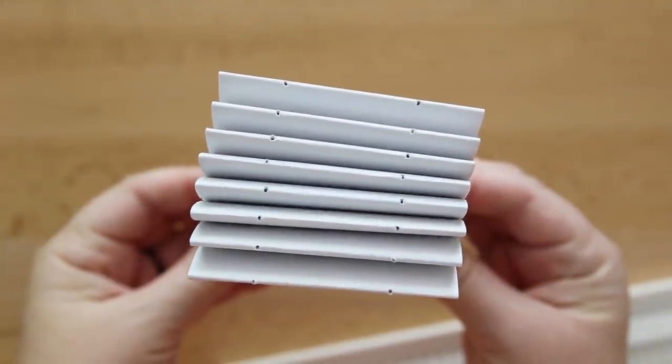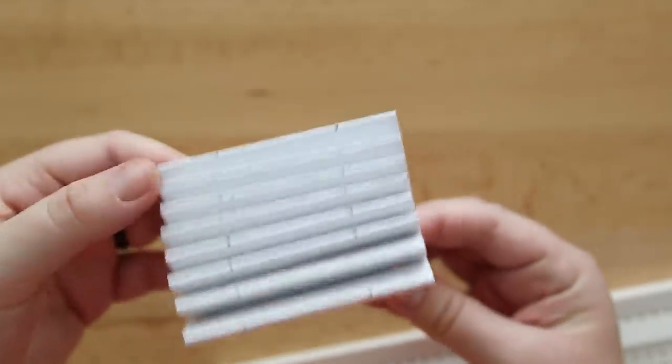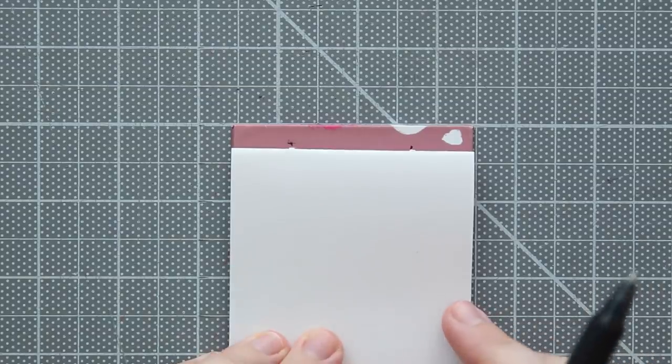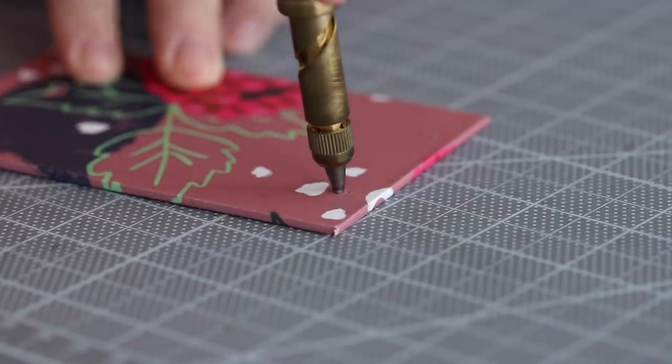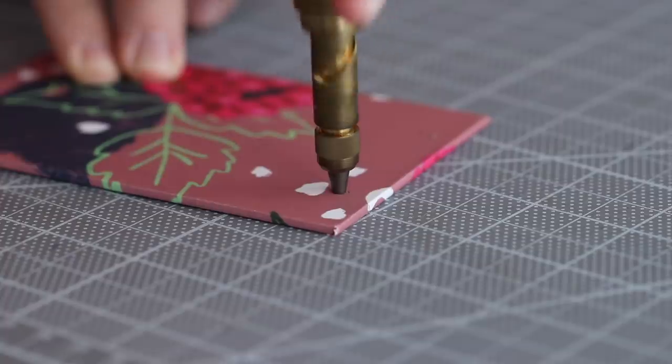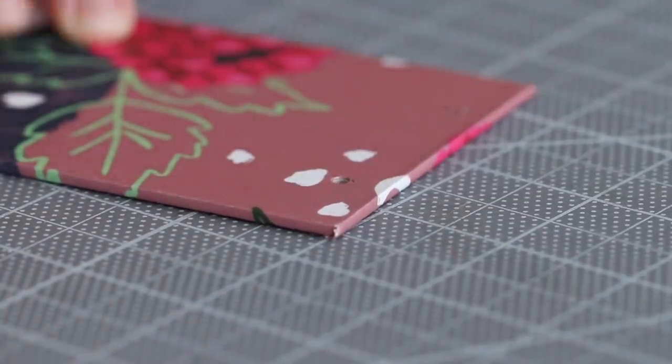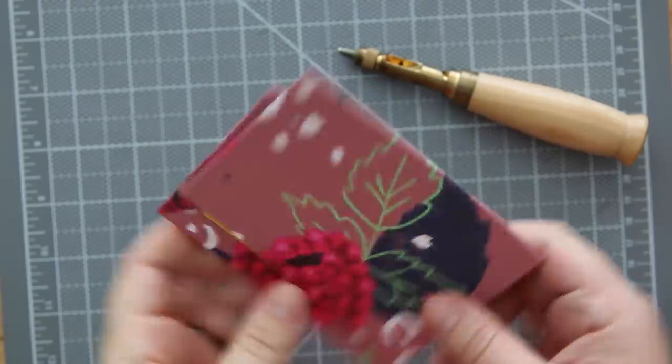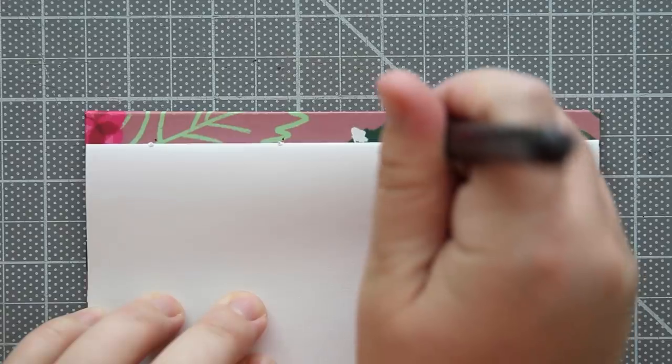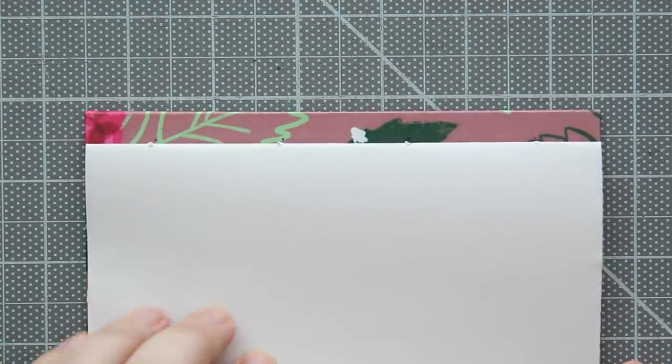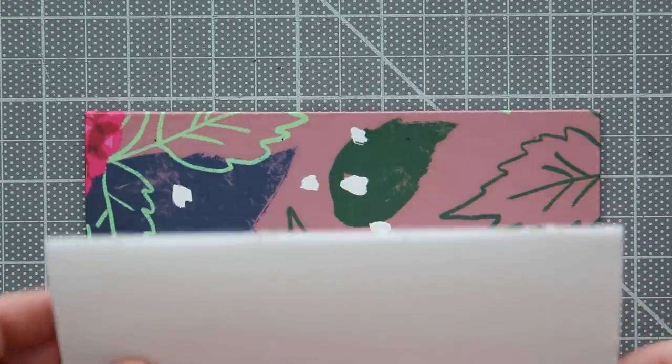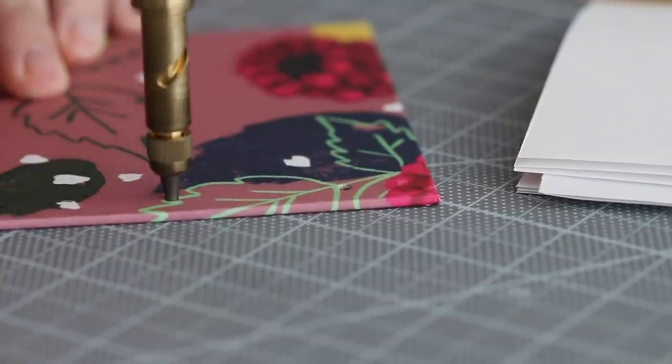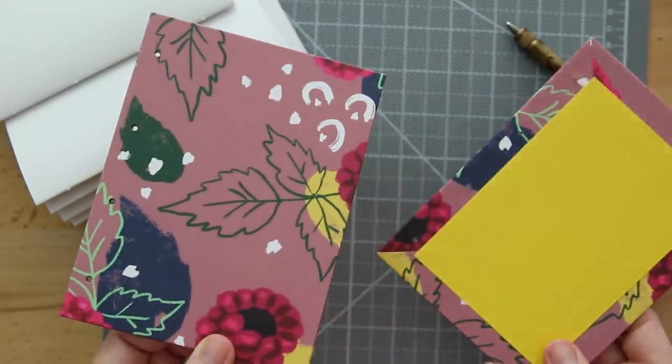Now I'm going to use one of the signatures as a template and make the holes for the covers. Starting with the smaller book, I made marks three-eighths of an inch away from the edge, and this time I'm going to use a screw punch to make the holes in the board. This will give a cleaner cut, but you can also do this with an awl or a thumbtack. Just make sure that it's large enough to sew through. Now on to the larger book, I did the same process, marking where the holes will go three-eighths of an inch away from the edge and using the screw punch.